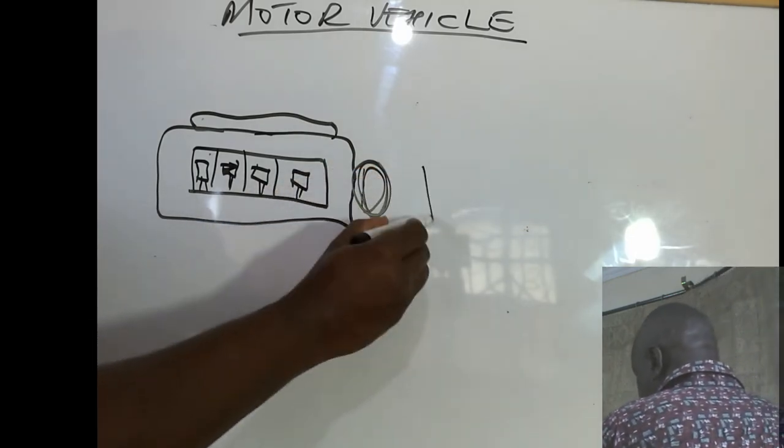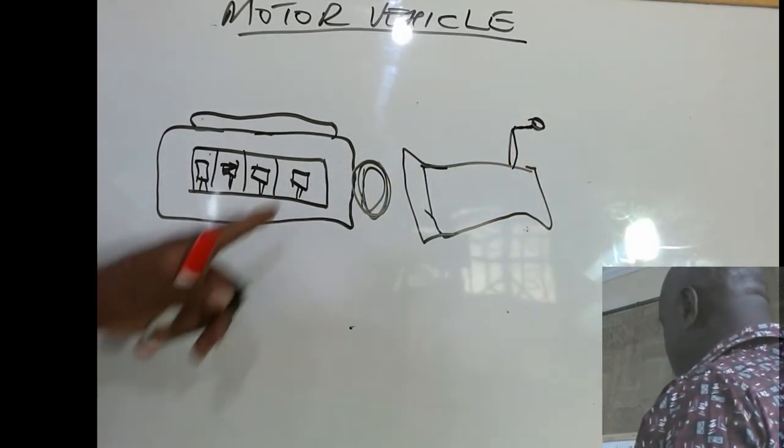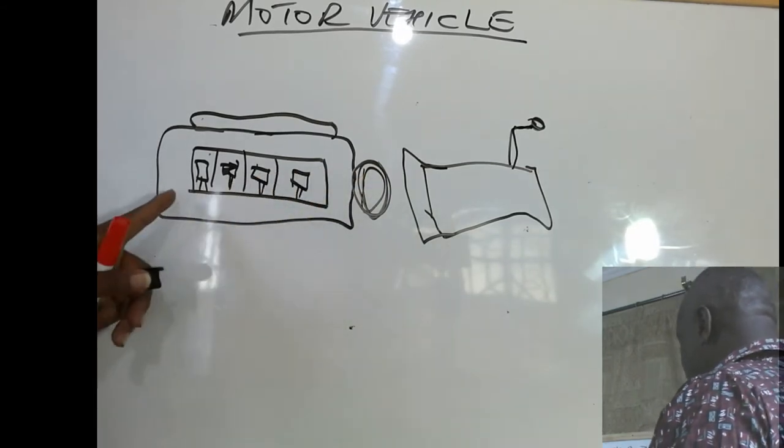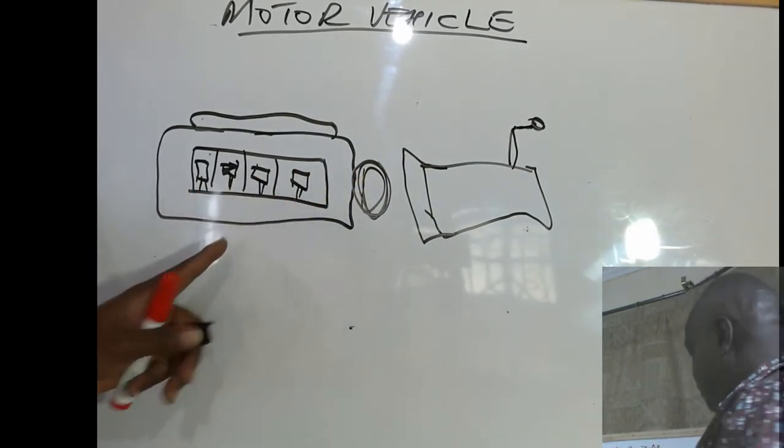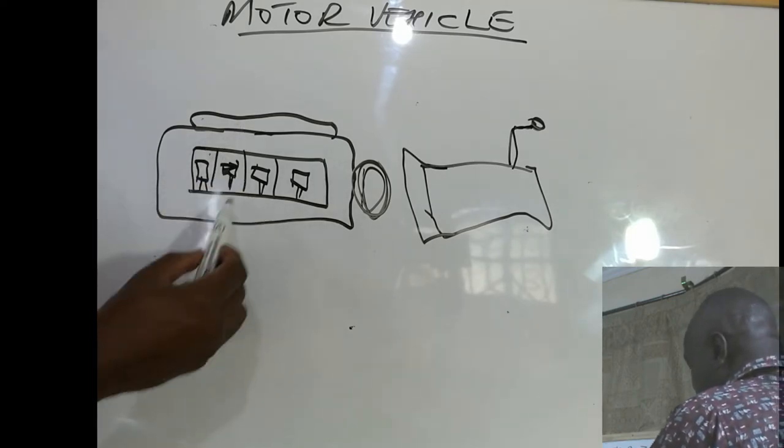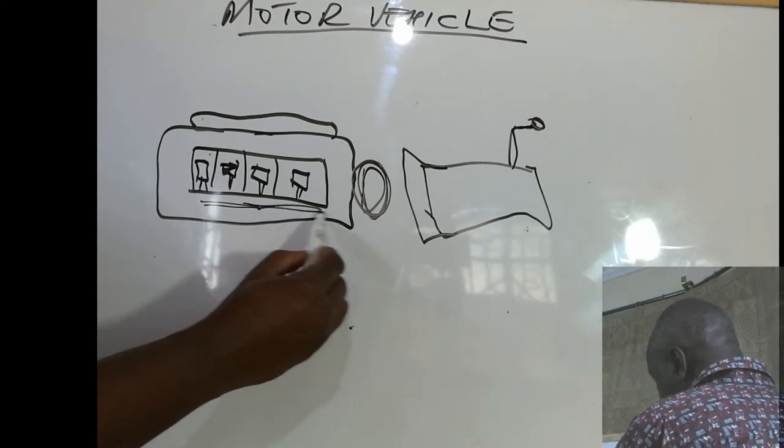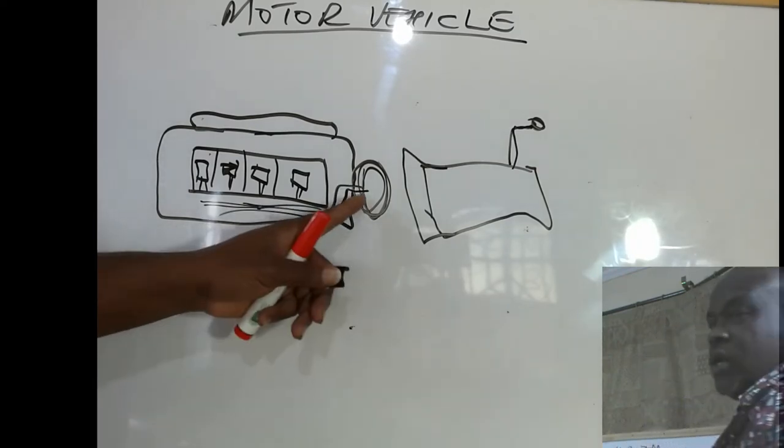Then we have your gearbox here, and your gear lever. The engine is already rotating through combustion. And the pistons are going up and down. And they are producing a motion that is rotating the flywheel.